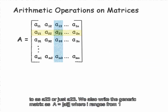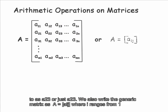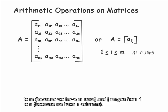We also write the generic matrix as A equals [A sub ij], where i ranges from 1 to m because we have m rows and j ranges from 1 to n because we have n columns.